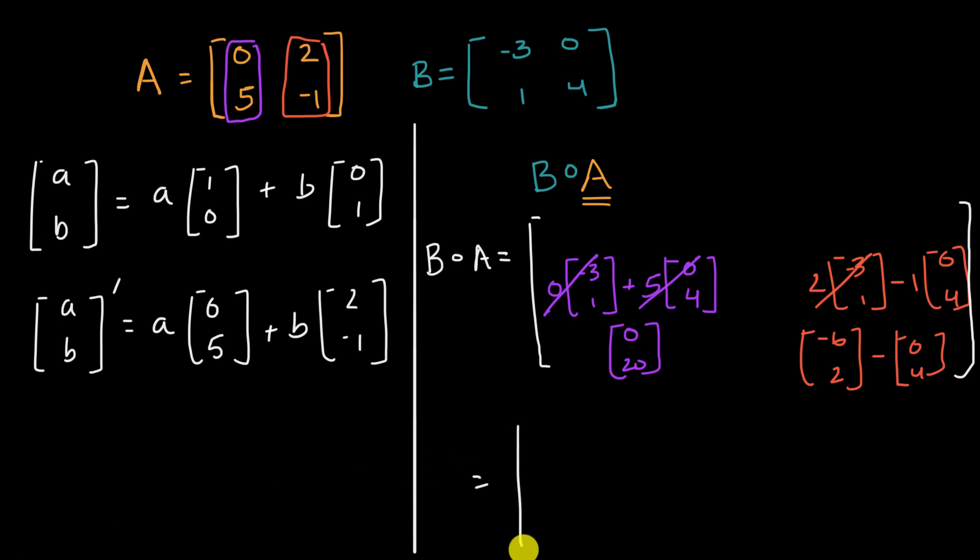And now if we wanted to write this clearly as a two by two matrix, this would be equal to, and we get a little bit of a drum roll here. The first column is zero 20. And then the second column is going to be, let's see, negative six minus zero is still negative six, and two minus four is negative two. And we're done. We have just created a new transformation matrix. It's based on the composition B of A. So if you apply transformation A first to any vector, and then apply transformation B to whatever you get there, that is equivalent to just applying this one two by two transformation matrix B of A.